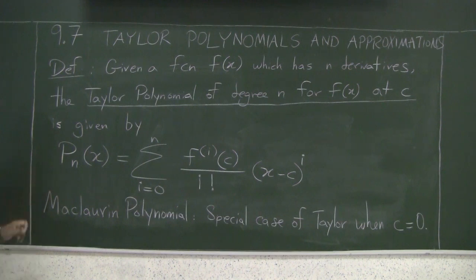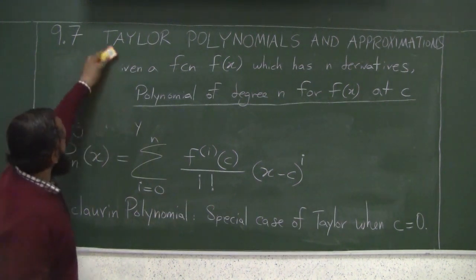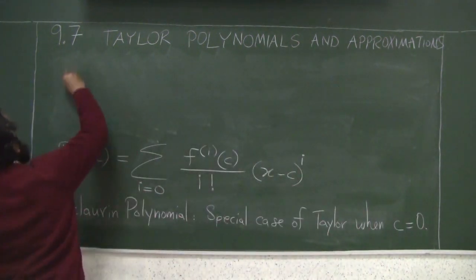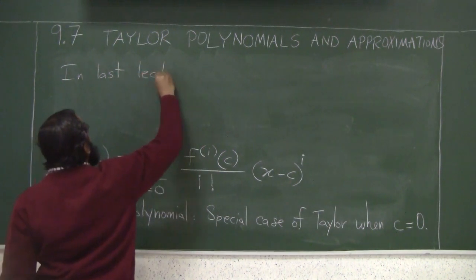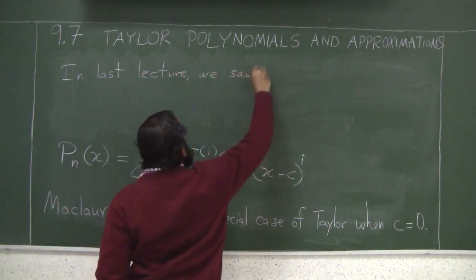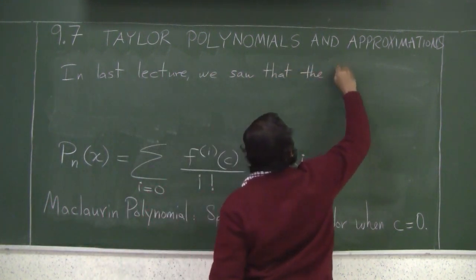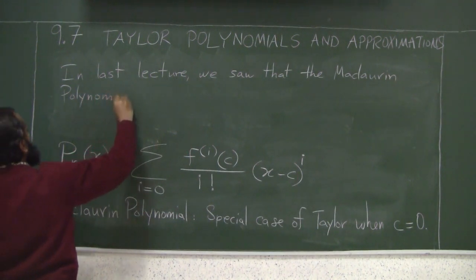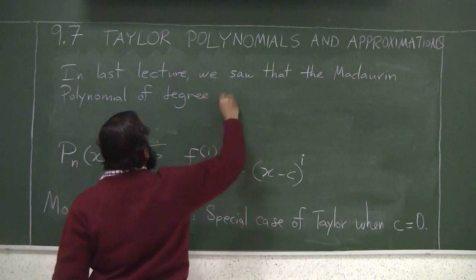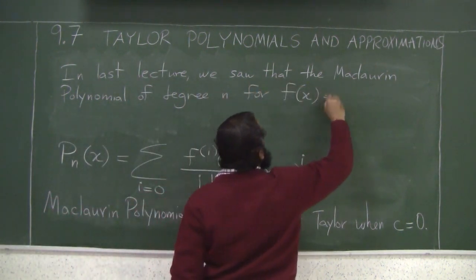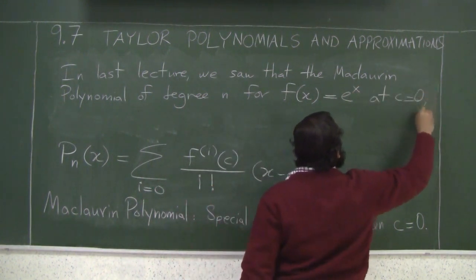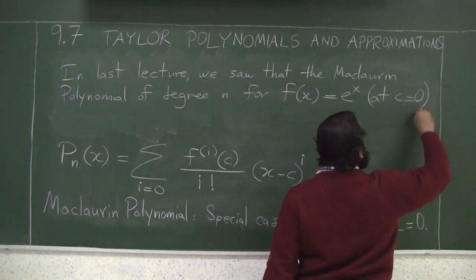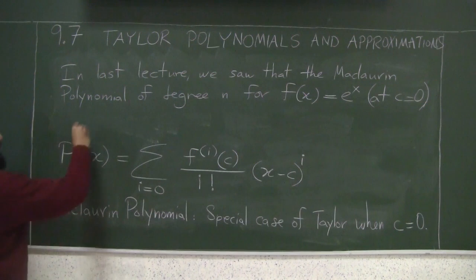I'll just end this with a very quick example, which is an example that you've already seen in the last lecture. We saw that the Maclaurin polynomial of degree n for the function e^x at c equals 0 - I shouldn't have to say c equals 0 because it is part of the definition of Maclaurin. Implicitly when we say Maclaurin we mean at c equals 0.